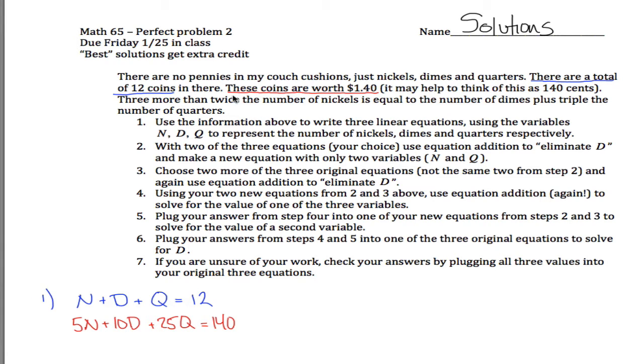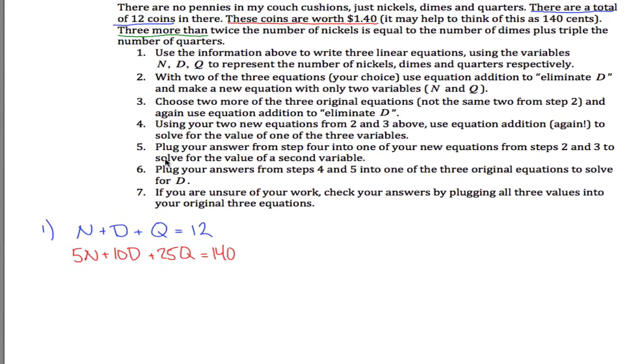And then our third equation says three more than twice the number of nickels, okay, three more than means we're going to take something and add 3 to it, three more than twice the number of nickels, so three more than twice the number of nickels is equal to the number of dimes plus, so the number of dimes plus triple the number of quarters. In other words, 3Q.